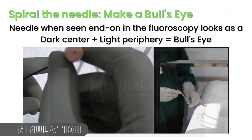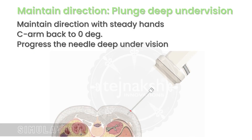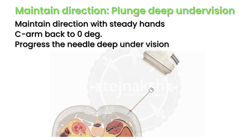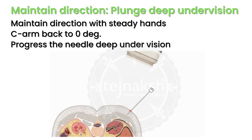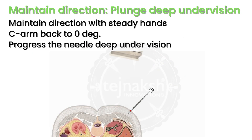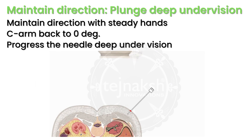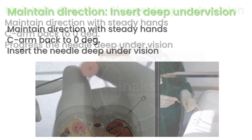Maintaining the bullseye, the needle is inserted until the kidney moves or jiggles. This indicates the needle tip reaching the renal capsule.